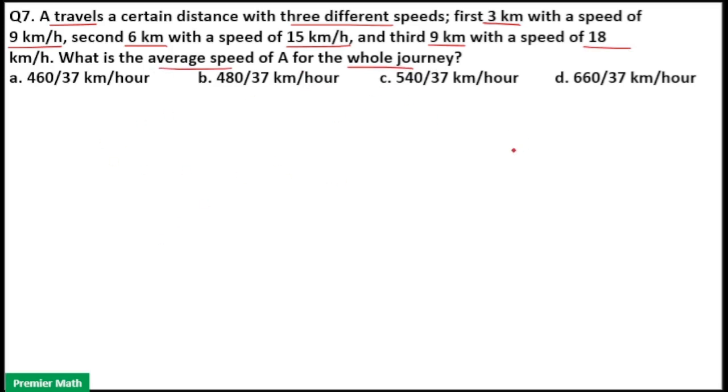Your distances are not the same. The distances are different. Here A travels 3 km with a speed of 9 km per hour, then he travels 6 km with a speed of 15 km per hour, then he travels 9 km with a speed of 18 km per hour. This is distance and this is speed here.